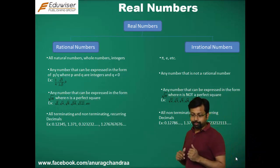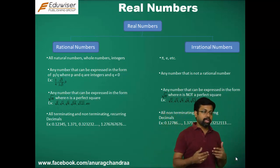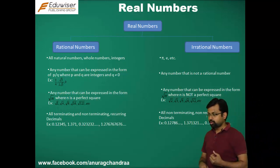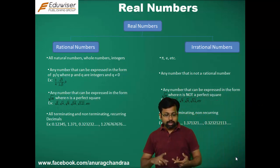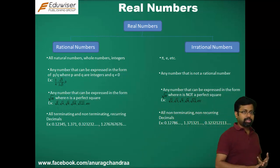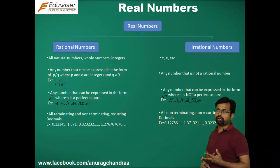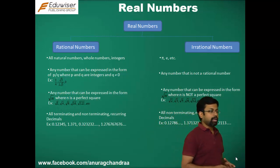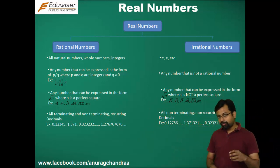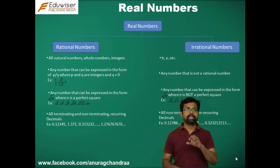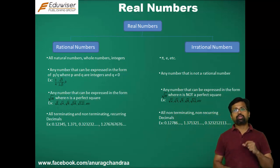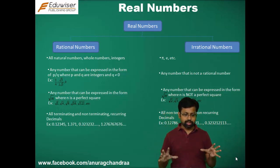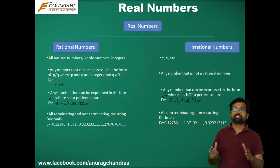The fourth way is by decimal representation. Any real number will have a decimal representation. There are three kinds: terminating decimals, non-terminating recurring (repeating) decimals, and non-terminating non-recurring decimals. Of these, all terminating and non-terminating recurring decimals are rational numbers, whereas non-terminating non-recurring numbers are irrational numbers.